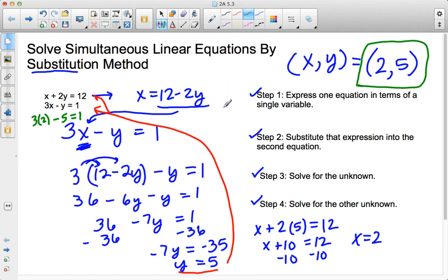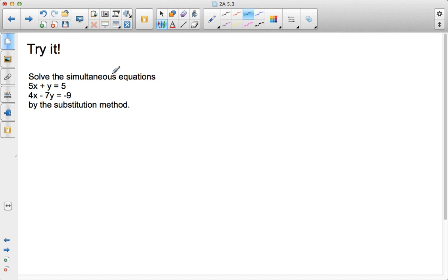And that is how you solve a simultaneous linear equation using substitution. That's all there is to it. Four steps. So, why don't you go ahead and try it. Solve the simultaneous equations: 5x plus y equals 5 and 4x minus 7y equals negative 9 using the substitution method. Good luck.